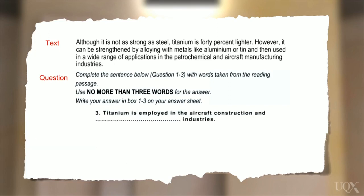Let's look at question three. The gapped sentence says, titanium is employed in the aircraft construction and industries. Now look at the second part of the second sentence in the text. And then used in a wide range of applications in the petrochemical and aircraft manufacturing industries. Let's look at some possible answers for this gap. Petrochemical and aircraft? That's no good. It repeats the word aircraft.